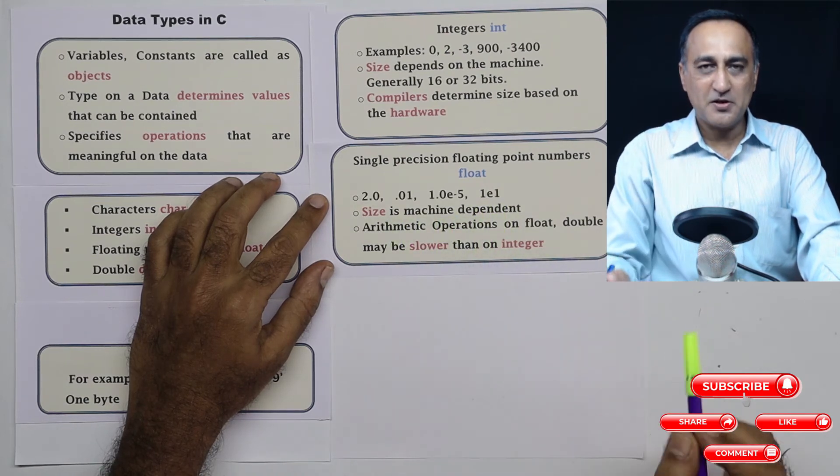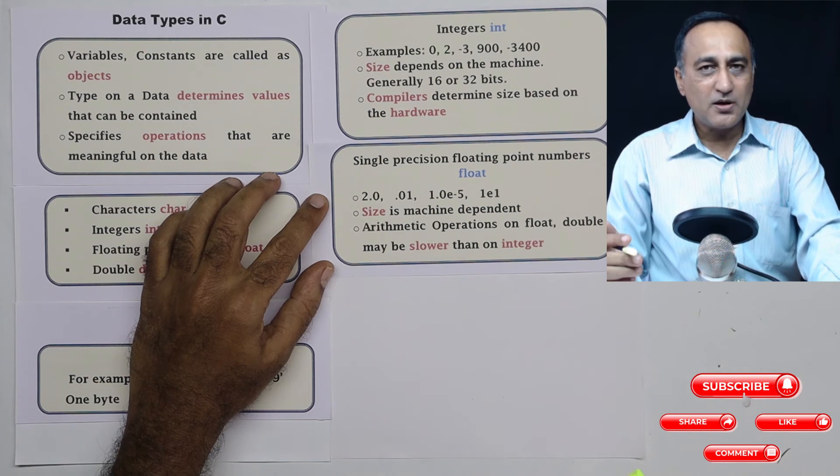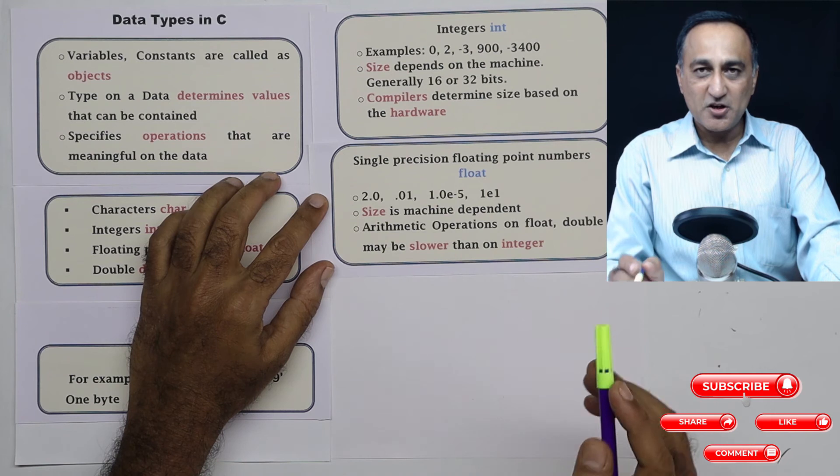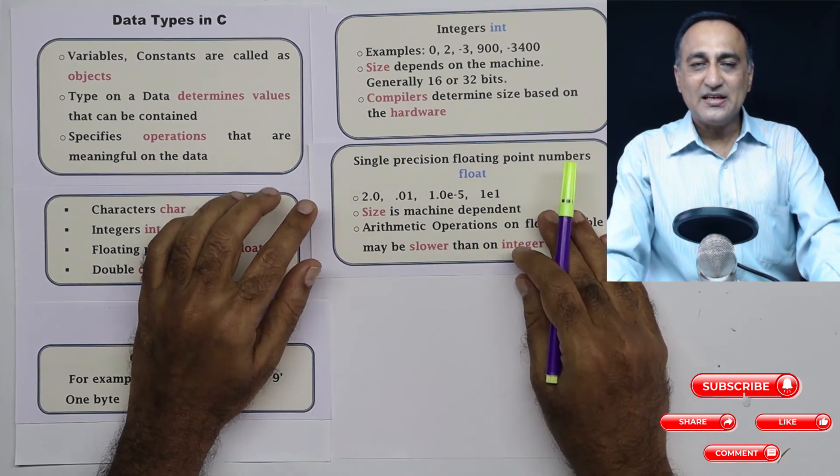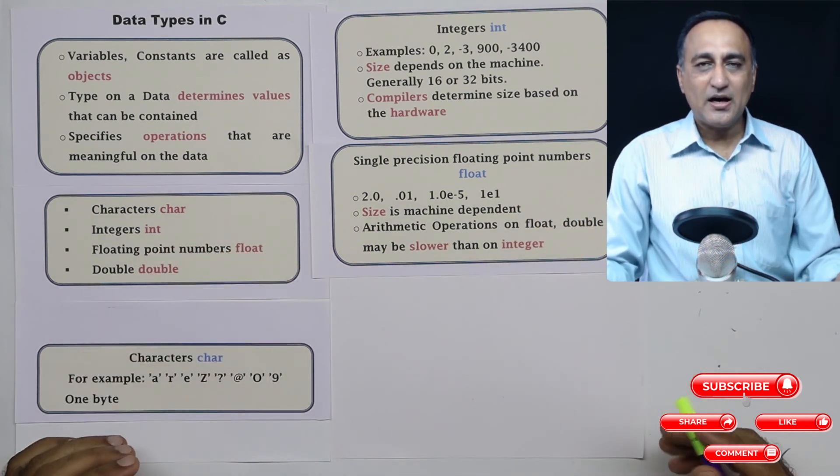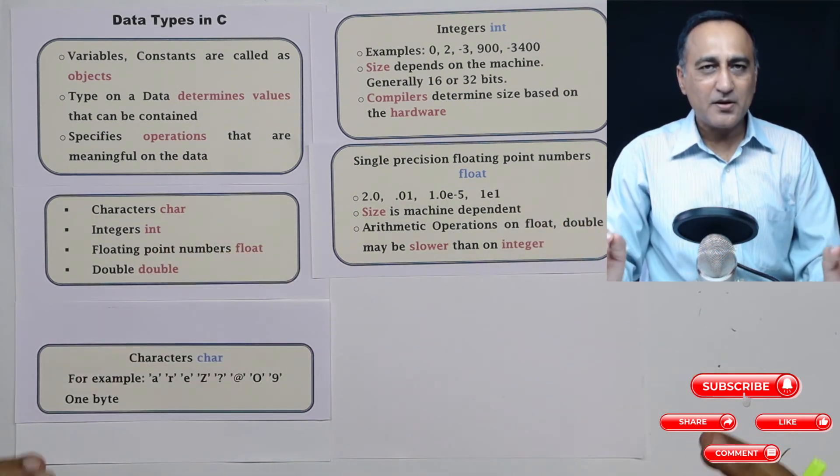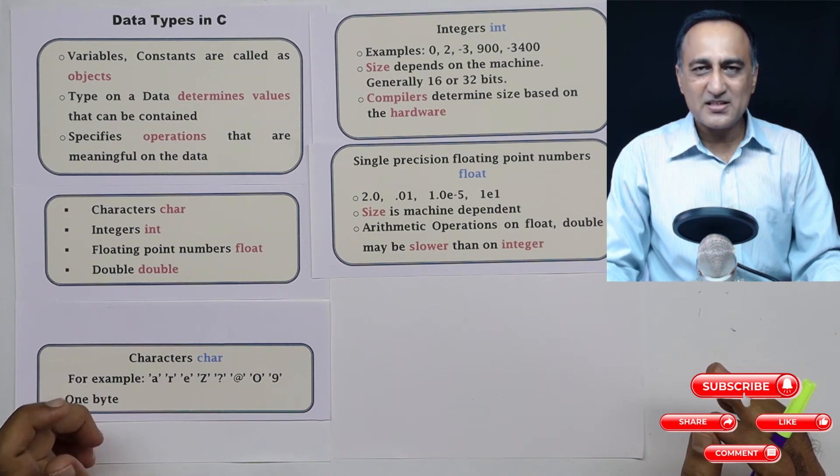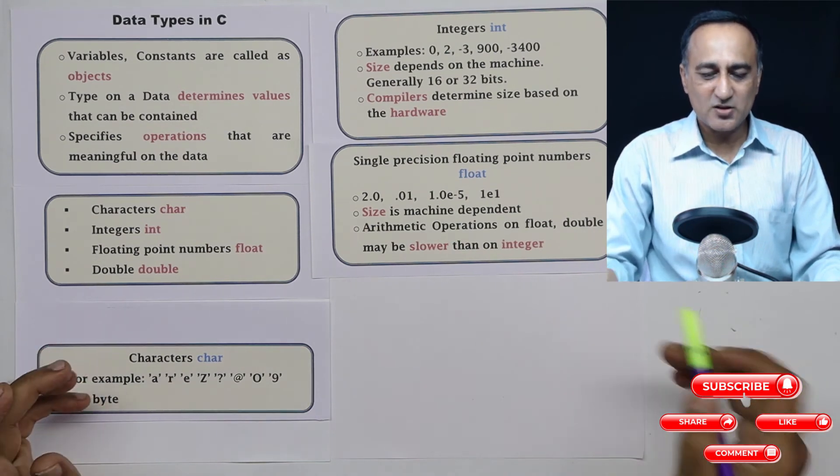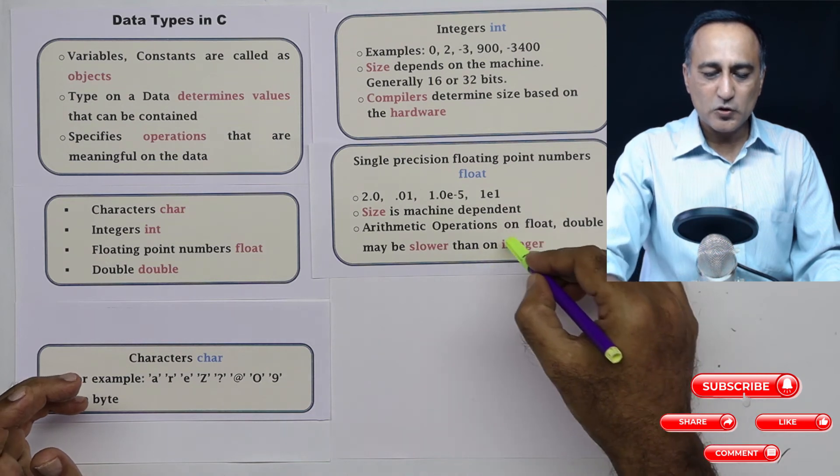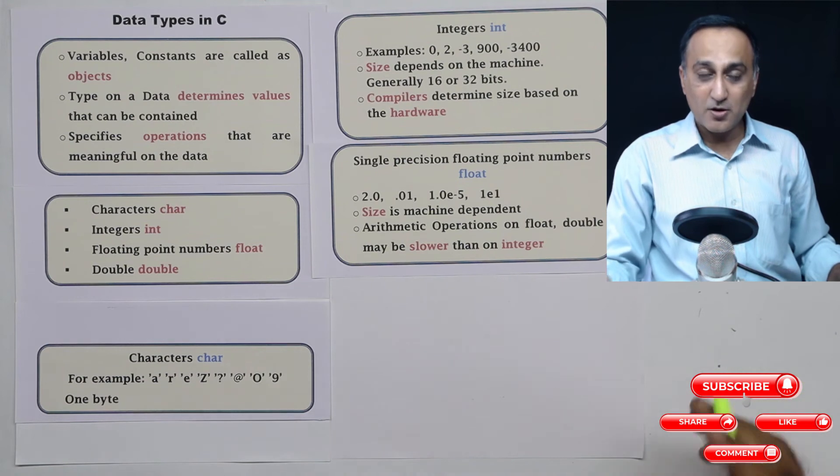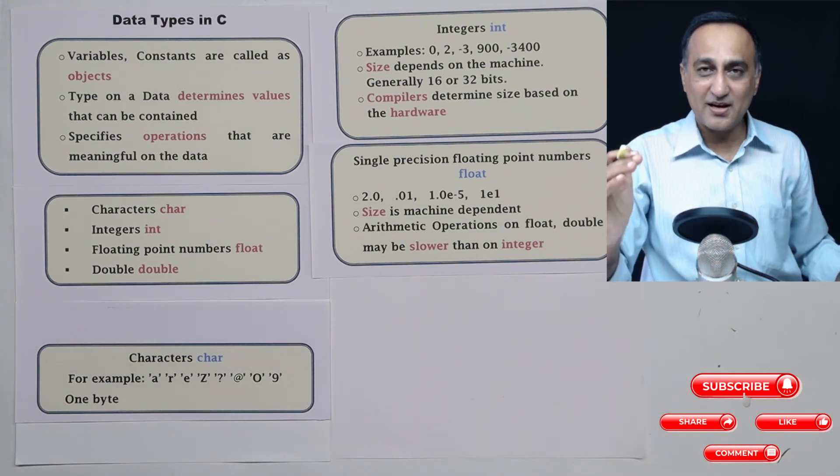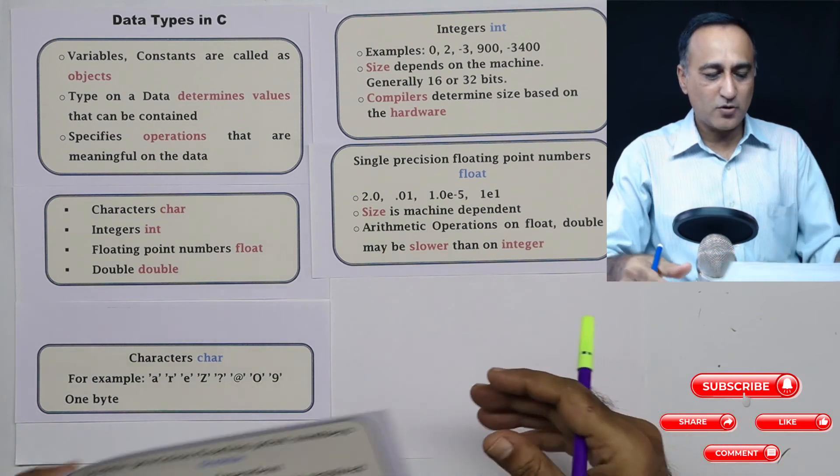Wherever possible, prefer to use integers over float or double, because arithmetic operations on integers are generally much faster. Float or double are stored in different combinations like a sign bit, mantissa, and exponent, so processing is slower. However, select the appropriate type - if someone's salary is a real number, use a floating point number.